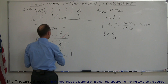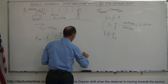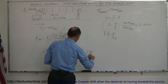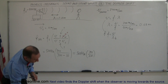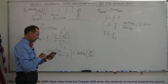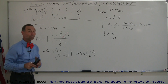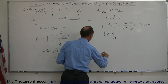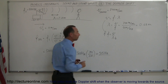The frequency the observer hears is 500 Hz times 340 divided by 330. Computing: 340 ÷ 330 × 500 equals 515 Hz. The observer will hear a frequency of 515 Hz rather than the 500 Hz of the source. That's how you work with the Doppler shift.